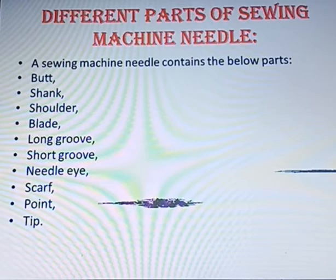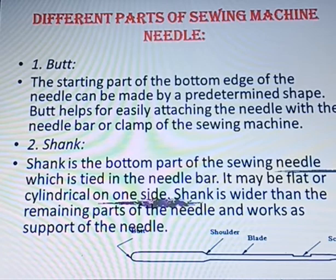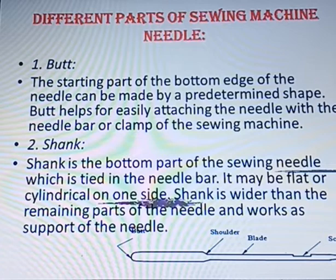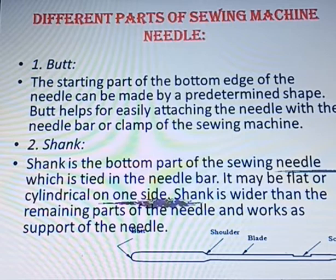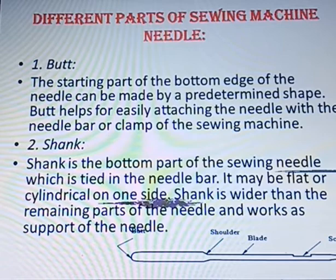The first part is the butt. The butt is the upper tapering, pre-determined shape which is attached to the clamp to the needle bar, which helps in the sewing. Then there is the shank. The shank is the bottom part of the sewing needle which is tied in the needle bar. It may be flat or cylindrical on one side. The shank is wider than the remaining parts of the needle, as wide as the needle bar where it has to be attached. It works as the support of the needle.